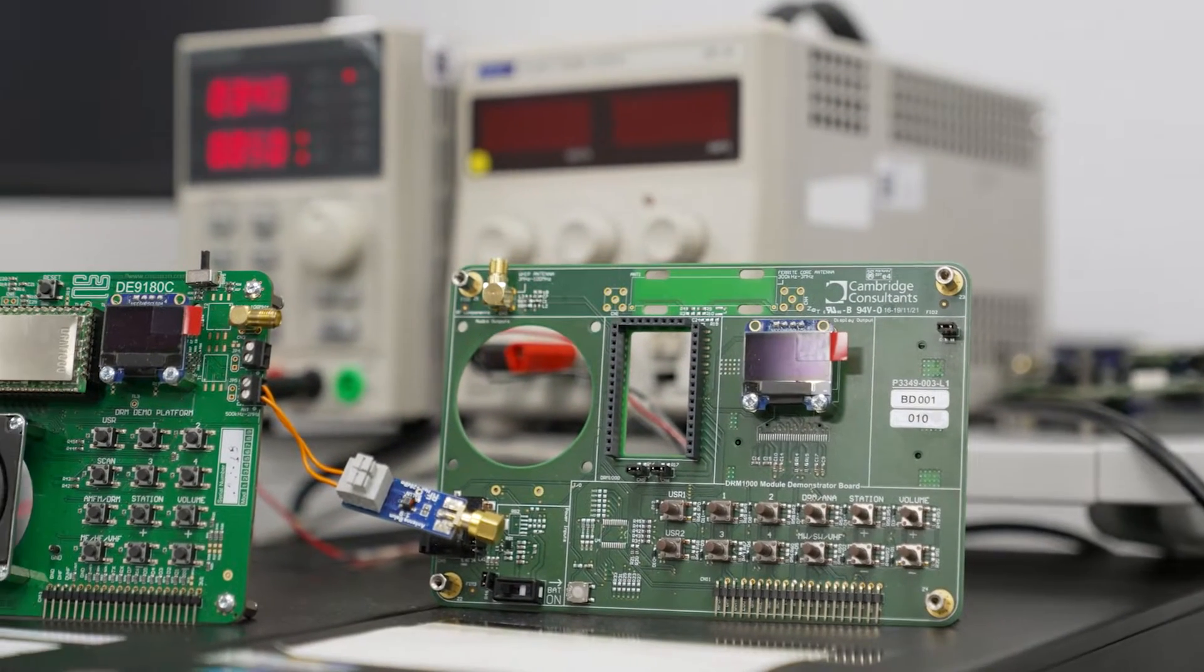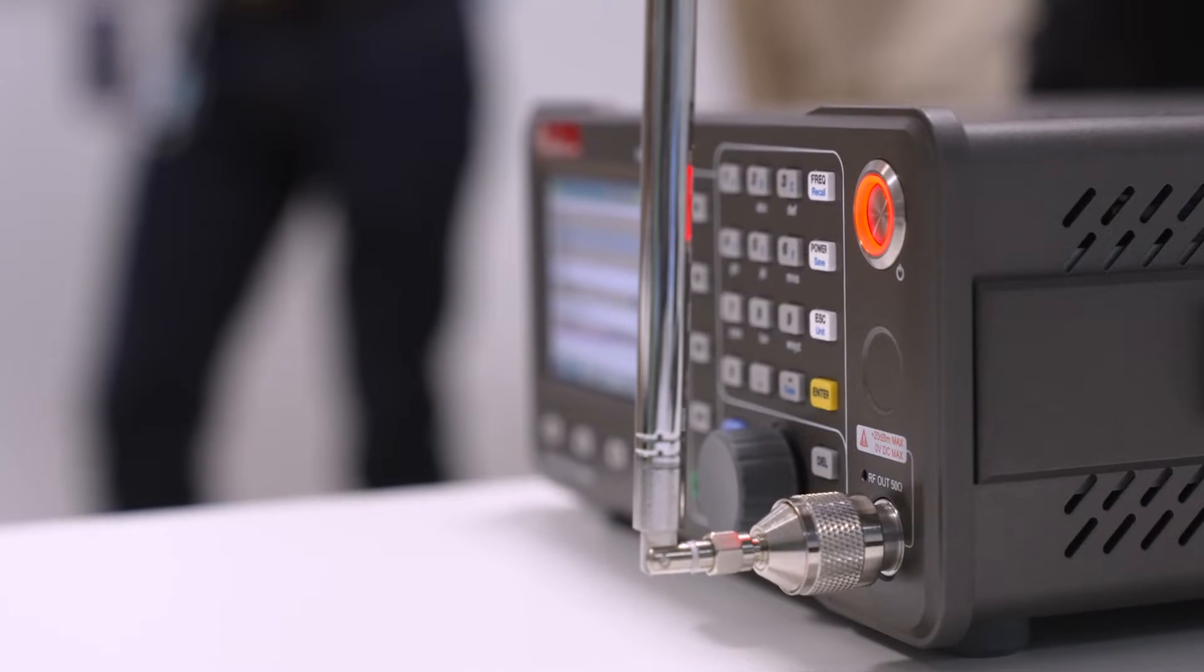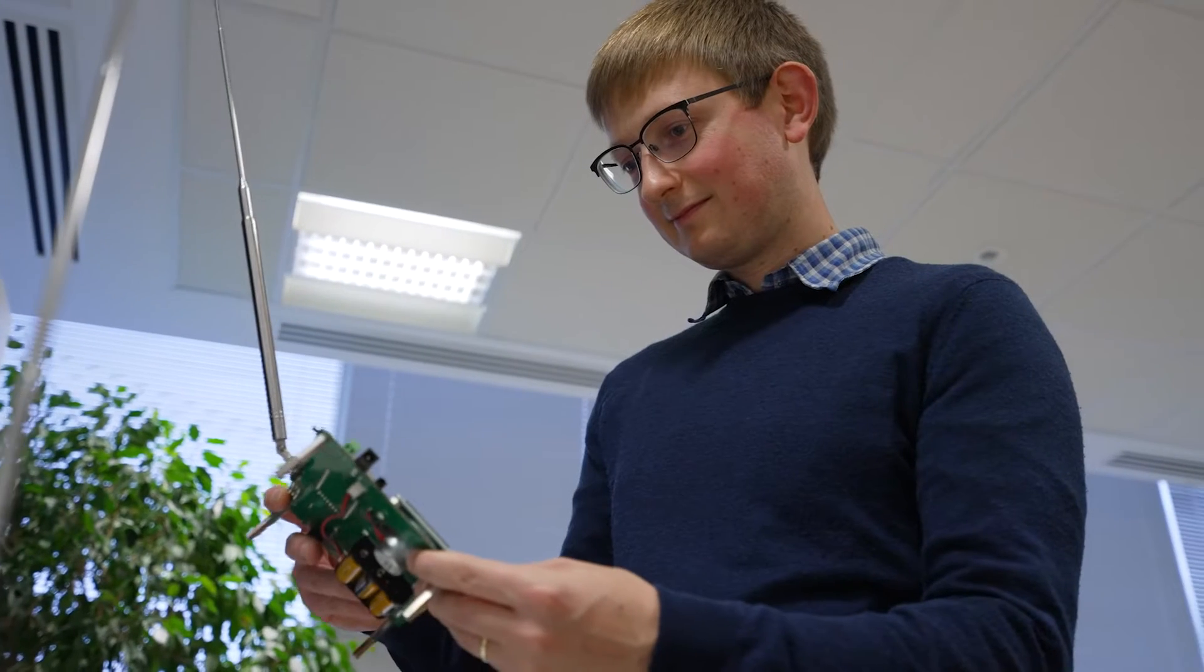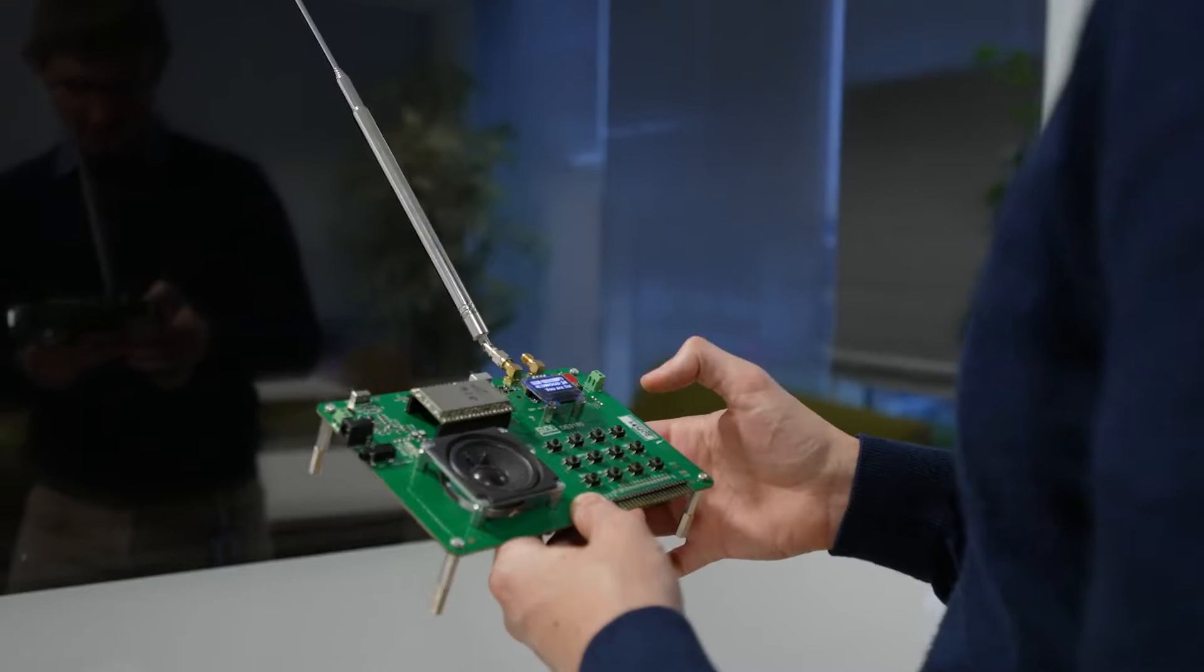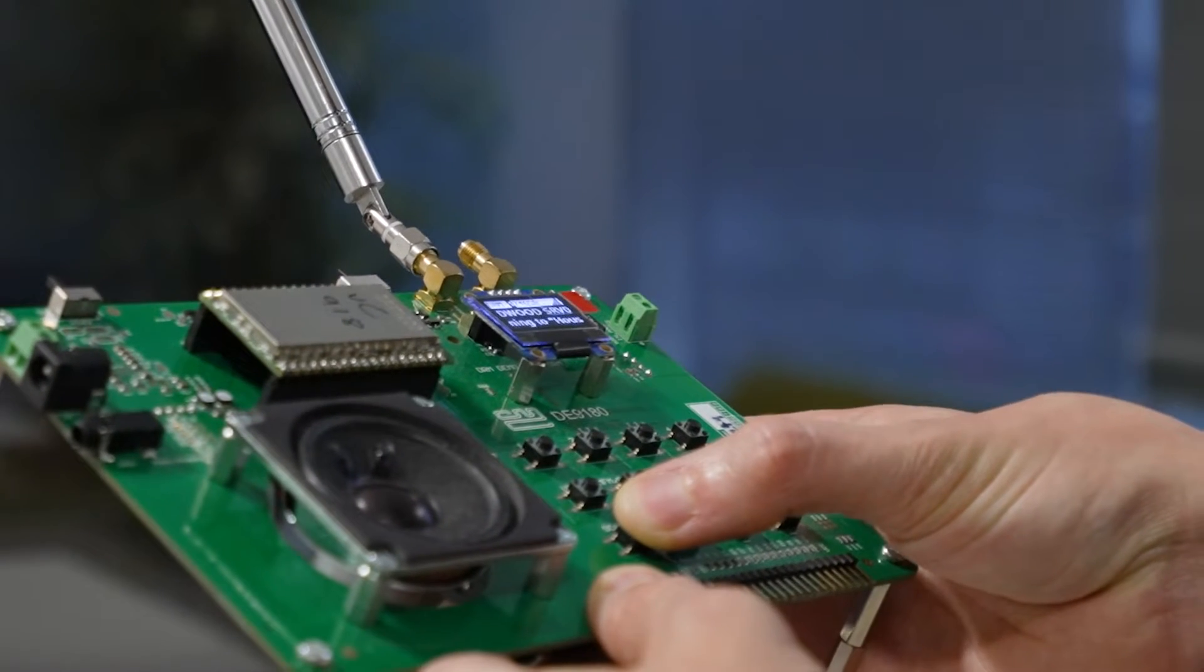DRM is probably the most comprehensive of the digital broadcasting standards, so it can address wide area broadcasting. You only have a few transmitters in an area, but you can cover a big geographical area, so you can roll out services quite cheaply.